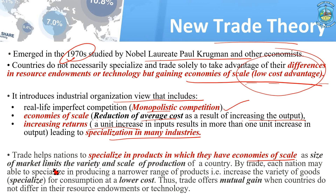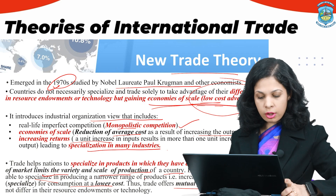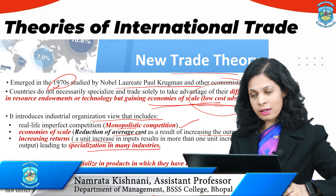Trade helps nations specialize in products where they have economies of scale, as per-unit cost of production becomes quite low when outputs are much greater relative to inputs. The size of the market limits variety — companies in ageing or limited markets like Europe or Japan cannot gain economies of scale if restricted to their domestic market. By trading with countries like India, they scale production and reduce per-unit costs. By trade, each nation may specialize in a narrower range of products, increasing consumption variety at lower costs, offering mutual gain even when countries do not differ significantly in resource endowment or technology.